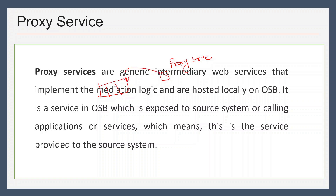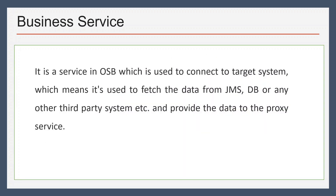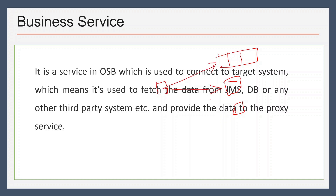The proxy service can also consume data from a JMS queue or a database. So it can be used as a consumer service as well, or it can be called by a source system as a web service call. We can expose proxy service as a SOAP-based service, any XML service, or a REST service. Next is business service — it is a service in OSB used to connect to a target system, which can be anything like a JMS queue or database or any other third-party system.